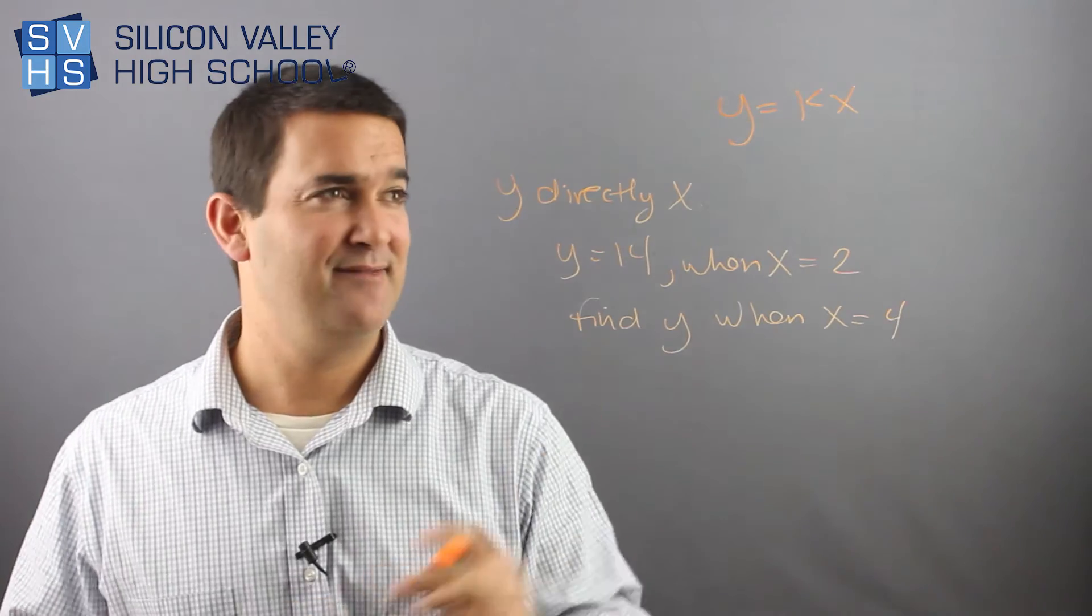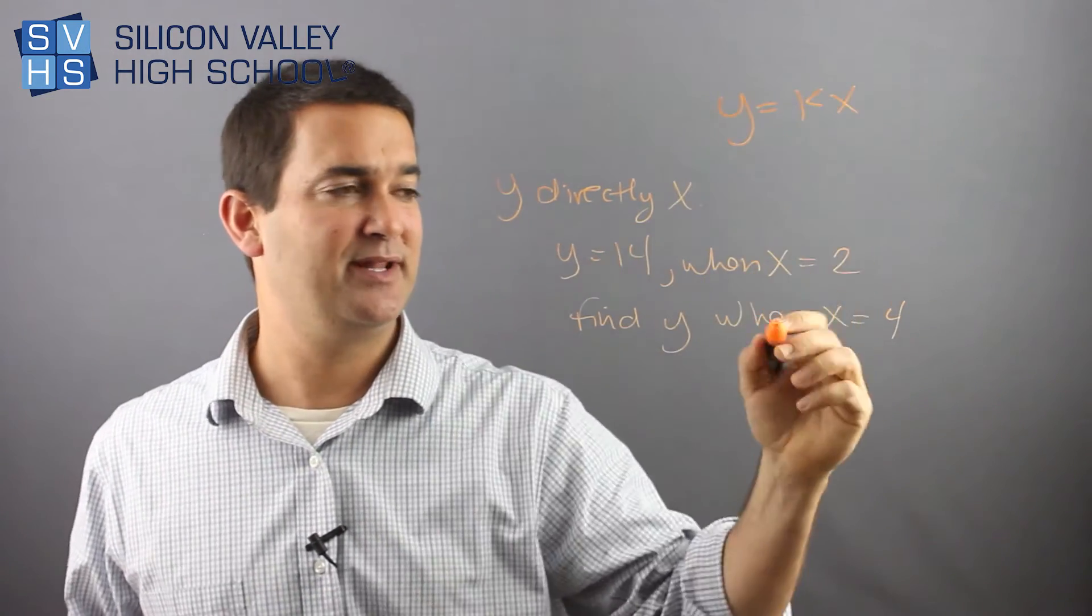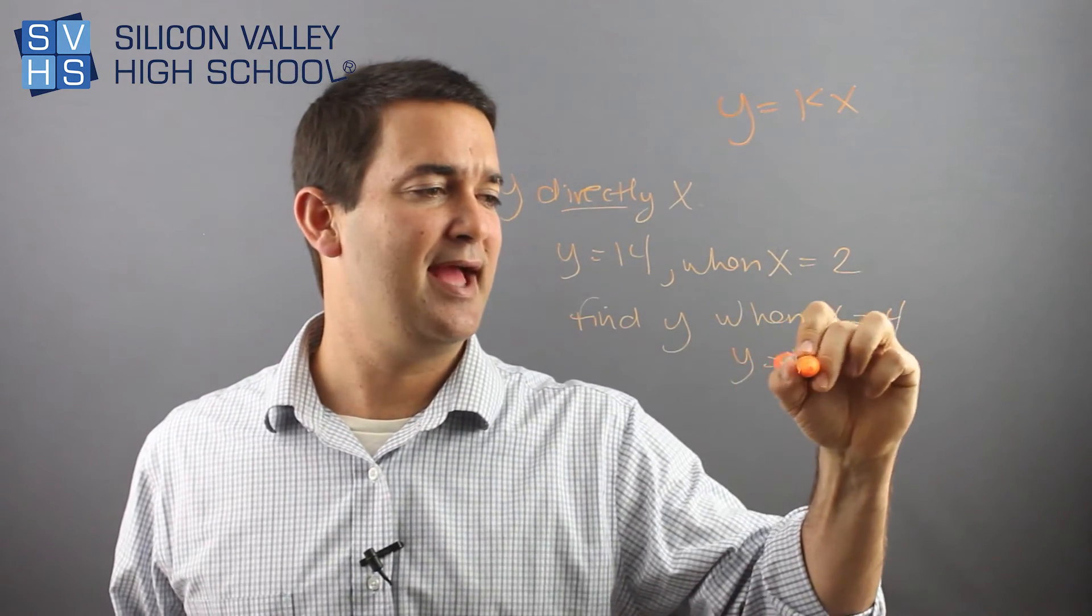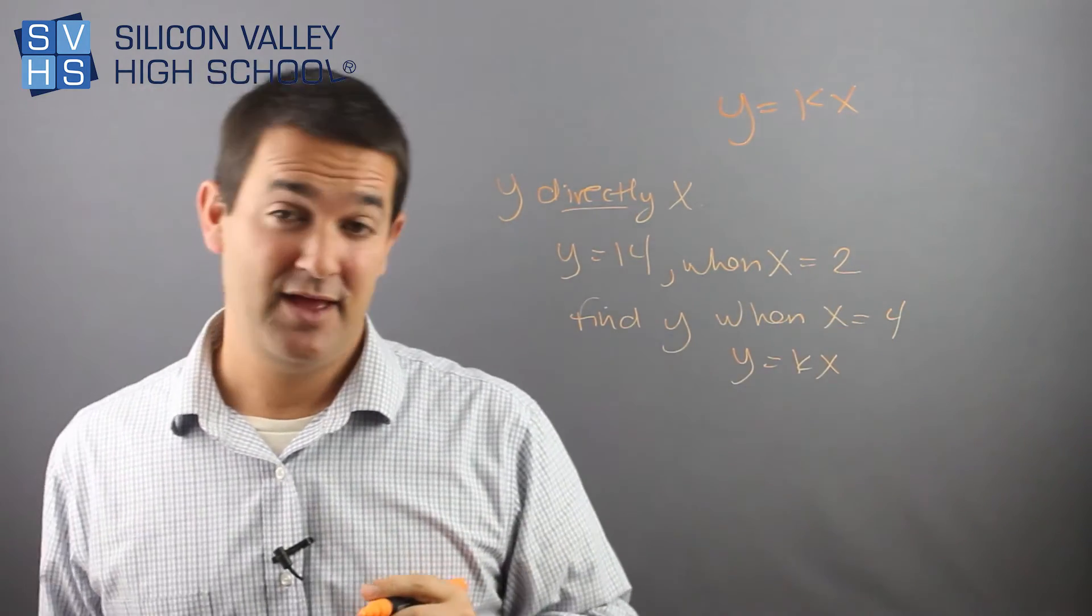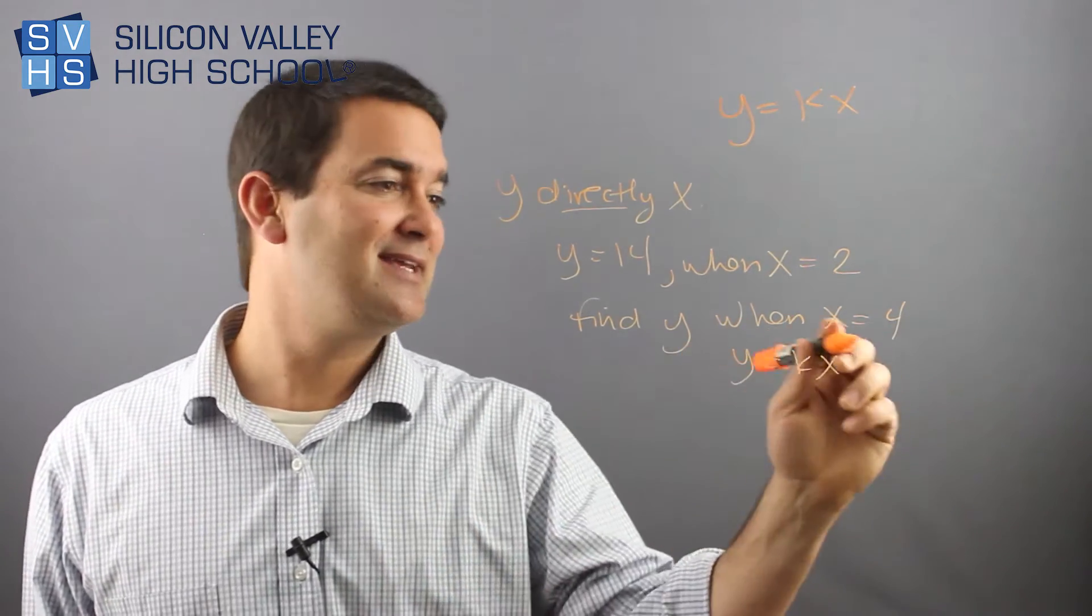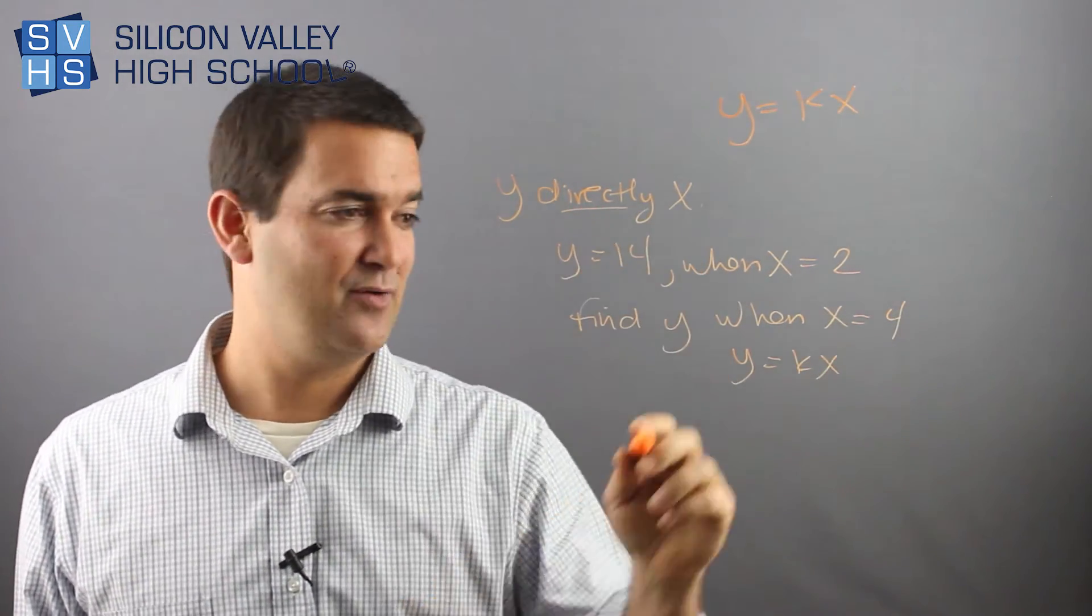So the first thing you'll do when you have this is you'll set up blindly this formula. You'll say the minute these people said directly, I write y equals kx. Done. I mean, if they said it varies inversely, watch the next video. But in this case, it varies directly. So this is done.